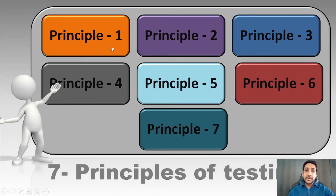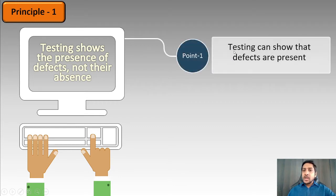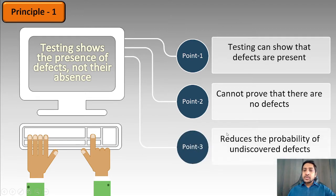The first principle states: Testing shows the presence of defects, not their absence. So testing can show that the defects are present. When you are doing testing, what you can show is that there are defects present in the software. But what you cannot do is prove that there are no defects. When we do testing, we actually reduce the probability of undiscovered defects.